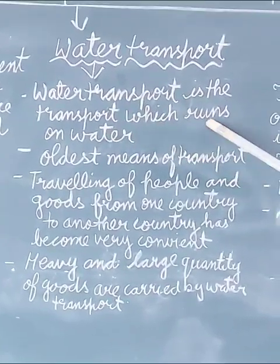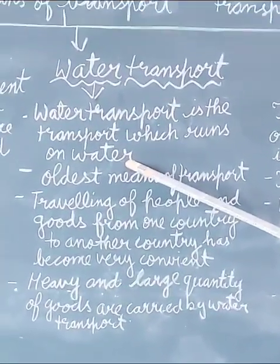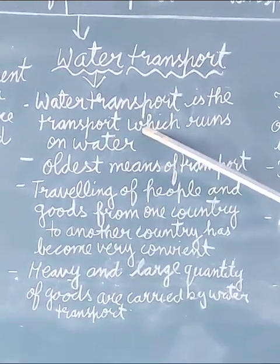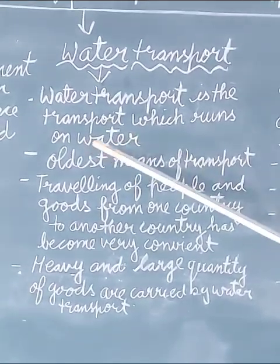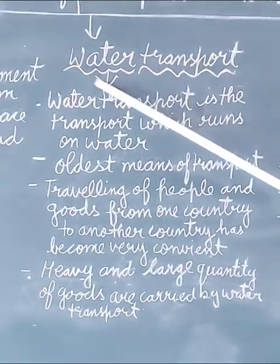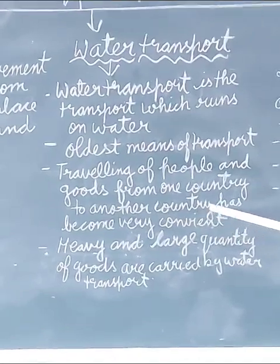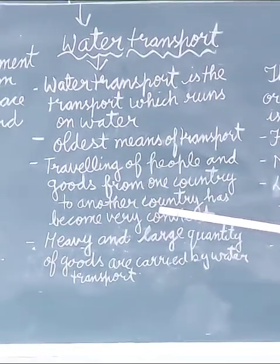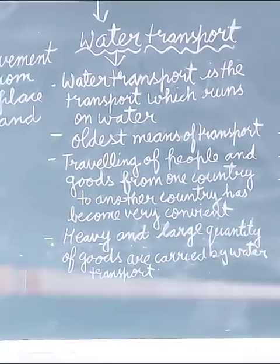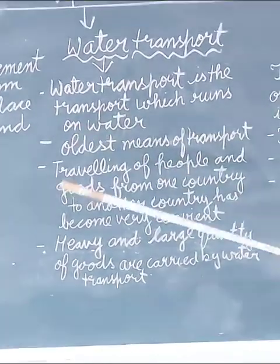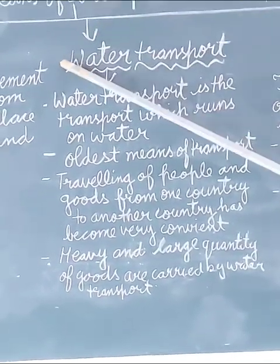Water transport is the transport which runs on water. When we send goods or go from one place to another, we use a transport which runs on water. It is the oldest means of transport. Travelling of people and goods from one country to another country has become very convenient through water transport - meaning it has become very easy to send large quantities of goods from one place to another.